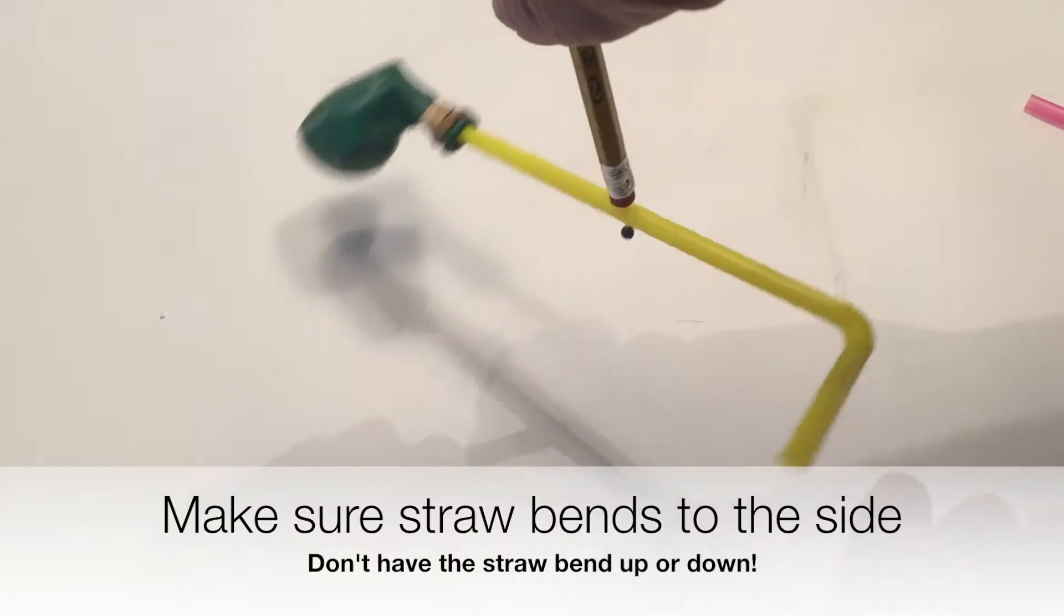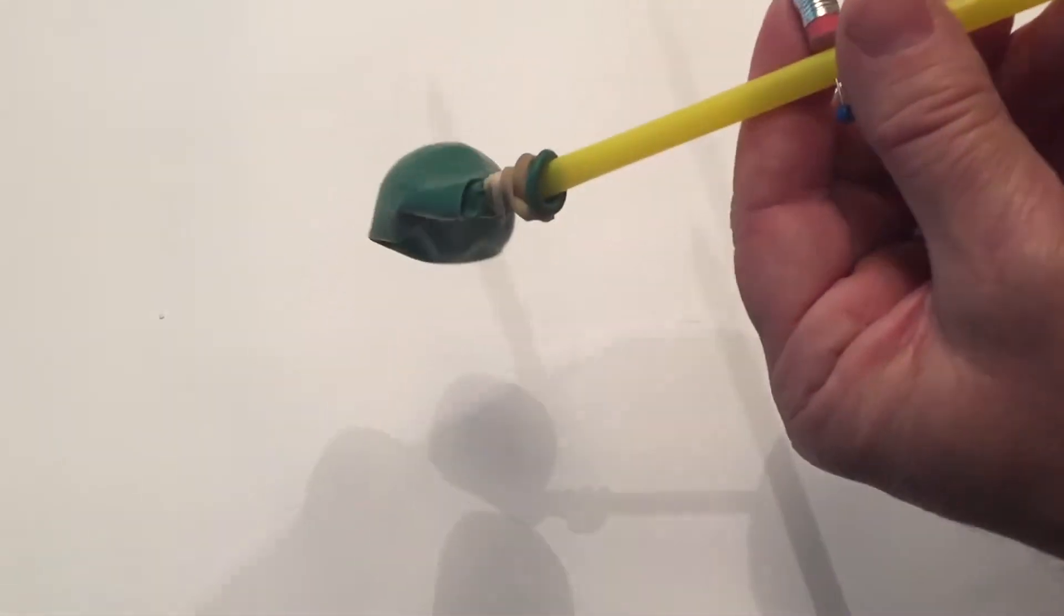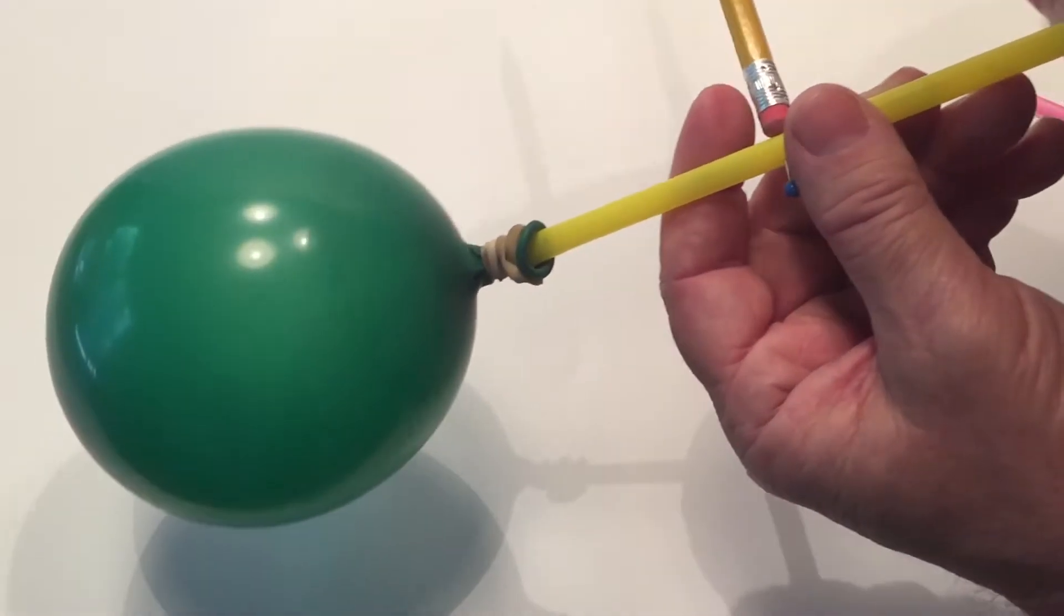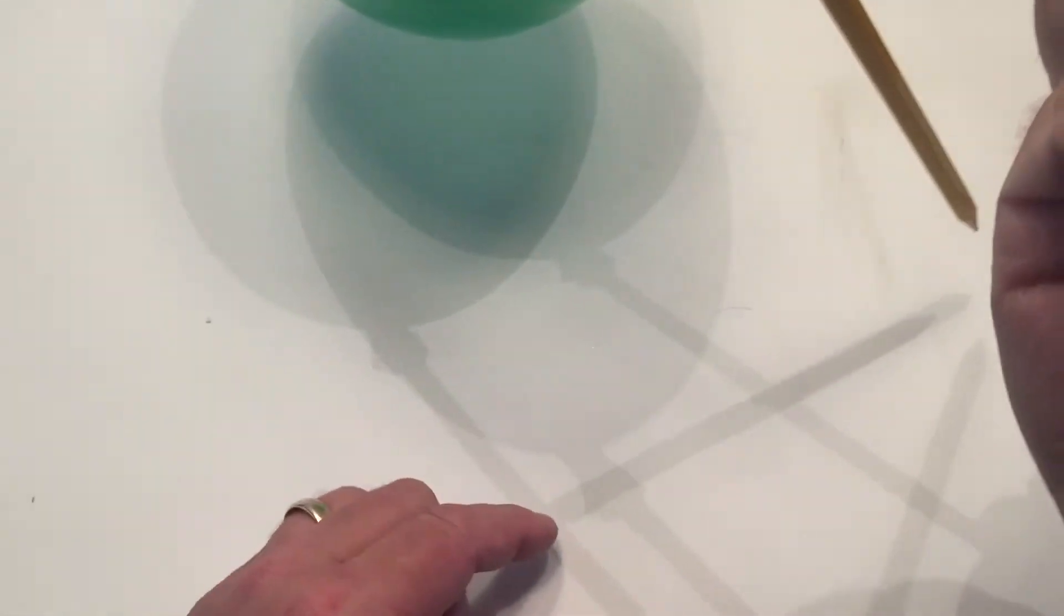All you do is blow into the empty end of the straw, the bendy end, until the balloon is completely full or the amount of wind power you want in there, and then cap off the straw with your thumb and then you're ready to go.